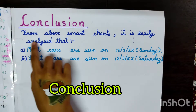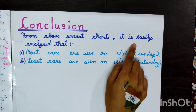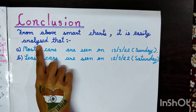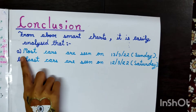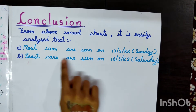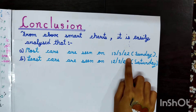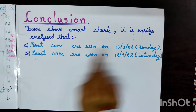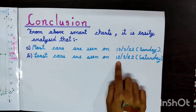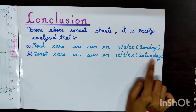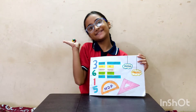Conclusion: From our Smart Charts, it is easily analyzed that most cars are seen on 13 March 2022, Sunday, and the least cars are seen on 12 March 2022, Saturday. Thank you. Have a nice day!